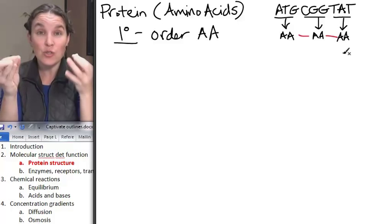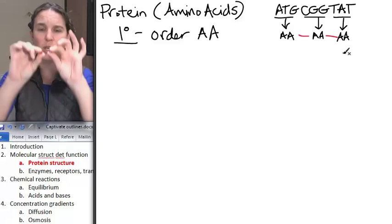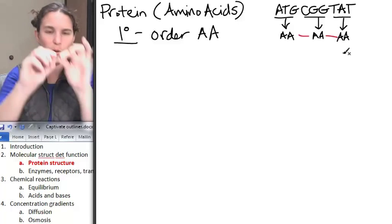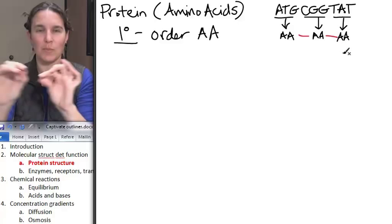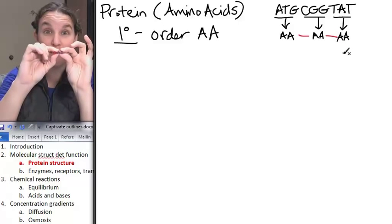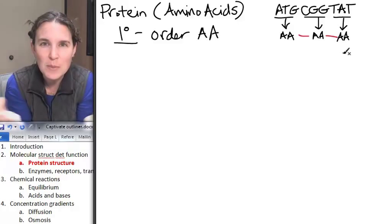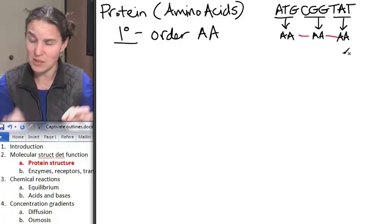So the primary structure of a protein is just the order that we put these in. We could put purple, red, purple, like that. You can't even see. Oh, I just tried to put, never mind. You could put them in this order or you could put them in that order. You're going to get a different protein depending on what order you put them in. So the order matters. That's your primary structure.